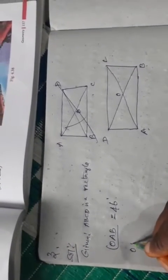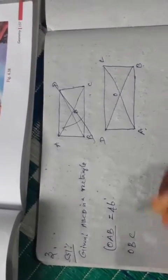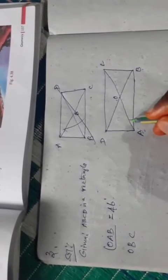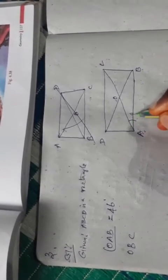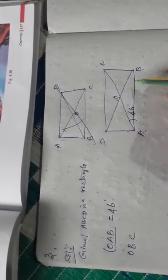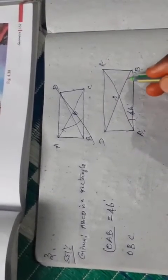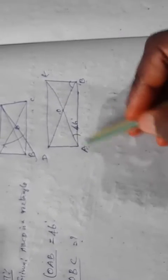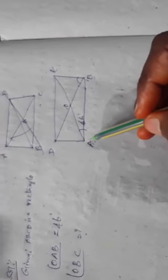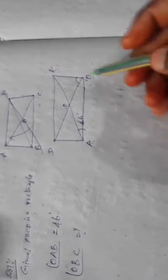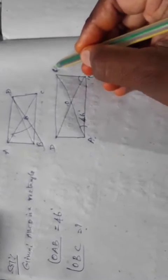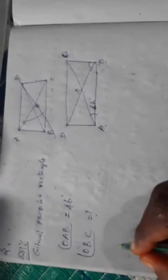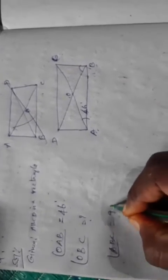Angle OAB is 46 degrees. We want to find angle OBC. Now, the angle ABC in a rectangle is 90 degrees — we take angle ABC equal to 90 degrees.